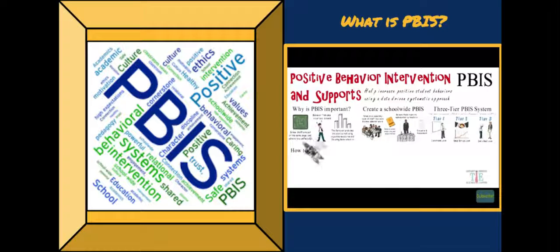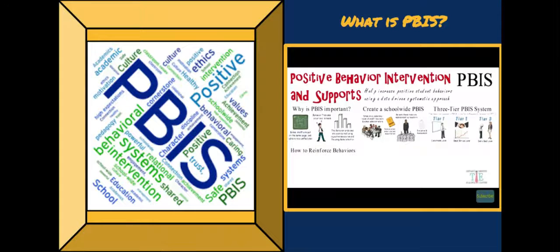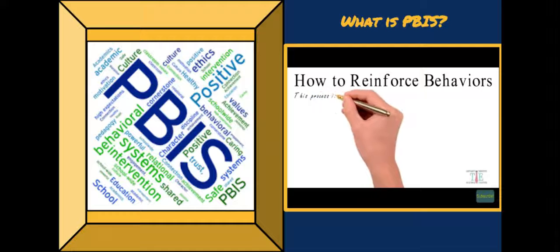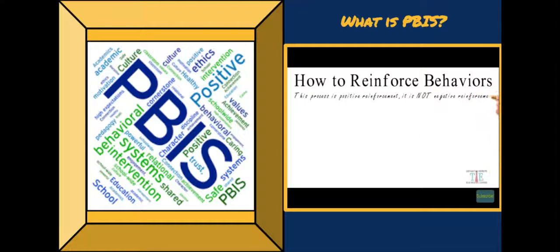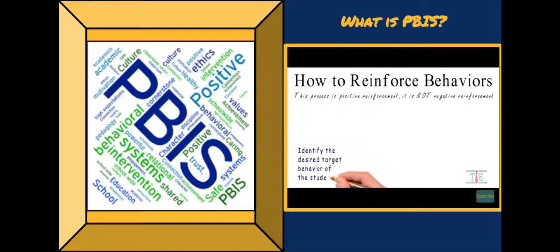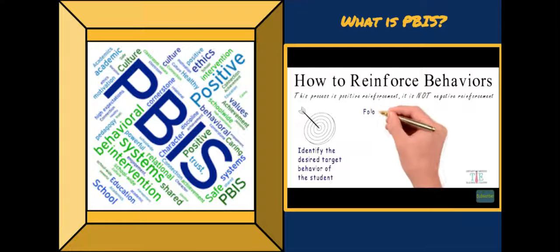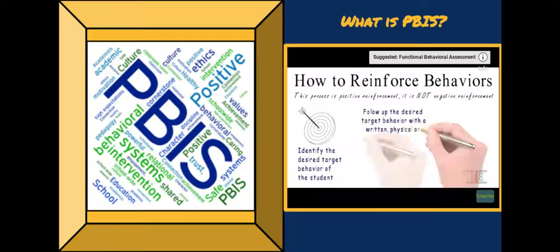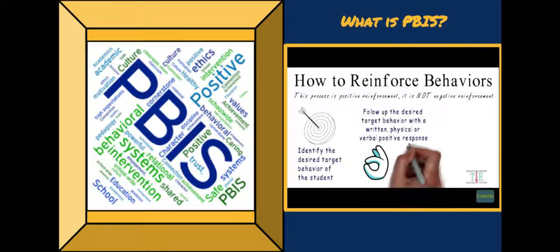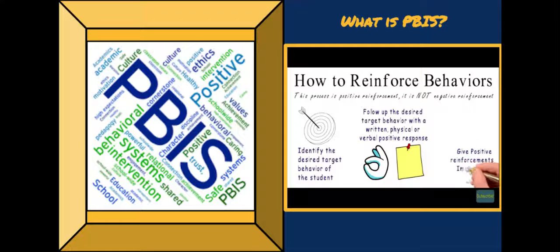Moving forward, consider how to reinforce behaviors. The process is positive reinforcement, not negative reinforcement. The first thing you want to do is identify the desired target behavior of the student — usually something like raising their hand, being on task, showing up on time, and other types of behaviors. If the student performs a target behavior, follow it up with a written, physical, or verbal positive response. You want to give positive reinforcements immediately after they occur — the longer you wait, the less effective that reinforcement is going to be.